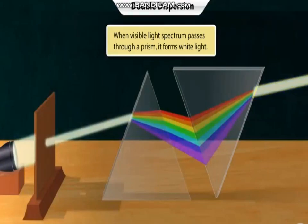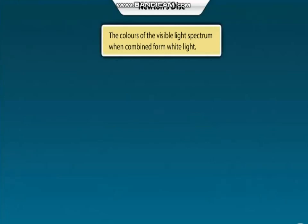What if you mix these seven colors together? Do you think you would get white light? The colors of the visible light spectrum, when combined, form white light. Let us prove this by doing a simple activity.